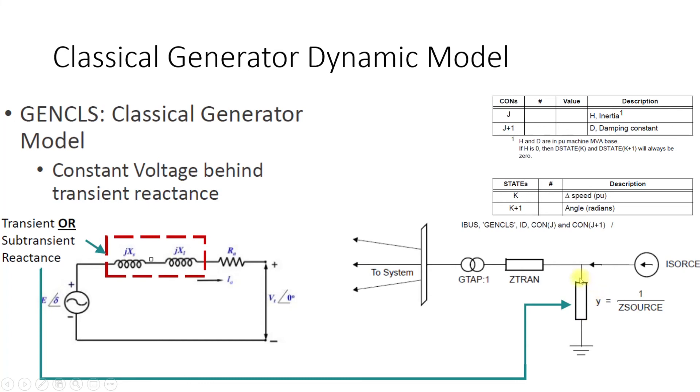Sorry, not a Thevenin equivalent. Like in short circuit analysis we used to convert everything into Thevenin equivalent, in dynamics what is done is everything is converted into current injection source or Norton equivalent. So this is the current source along with the Norton equivalent admittance.